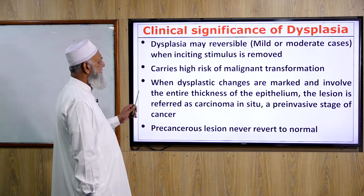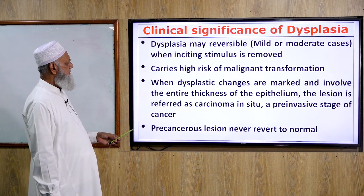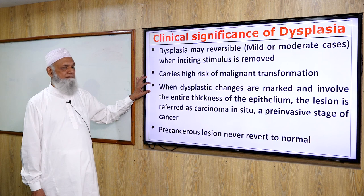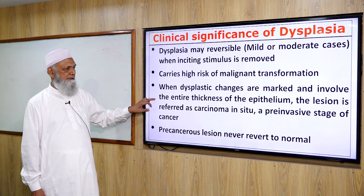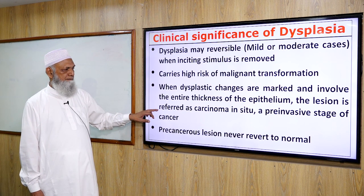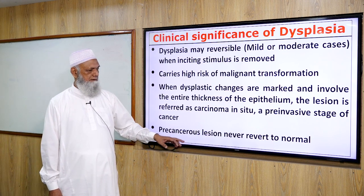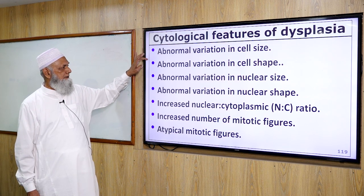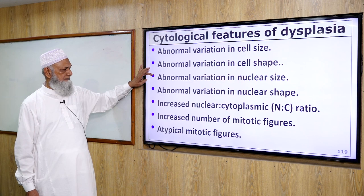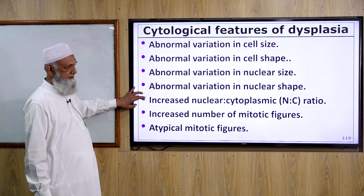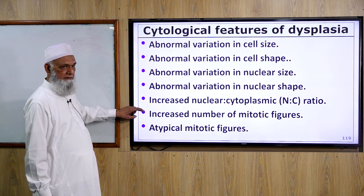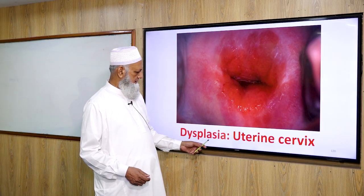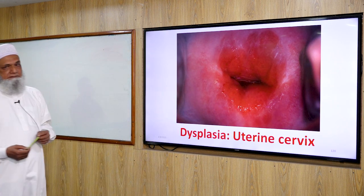Clinical significance of dysplasia: mild or moderate cases may be reversible when the inciting stimulus is removed. It carries high risk of malignant transformation. When dysplastic changes are marked and involve the entire thickness of the epithelium, the lesion is referred to as carcinoma in situ — a pre-invasive stage of cancer — which never reverts to normal. Cytological features of dysplasia include: abnormal variation in cell size and shape, abnormal variation in nuclear size and shape, increased nucleocytoplasmic (NC) ratio, increased number of mitotic figures, and atypical mitotic figures in grade 3 or higher.